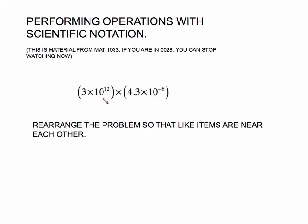First off, I suggest you take this problem the way it's written and rearrange the problem so that like items are near each other. What I mean by that is you've got a 3, you have a 4.3. Put those near each other. So this is 3 times 4.3, and just kind of stick that out by itself. Then put your exponent stuff together, 10 to the 12th times 10 to the negative 6.